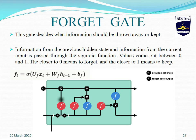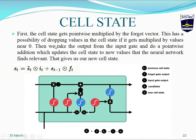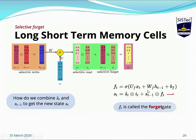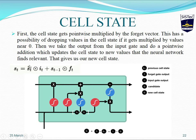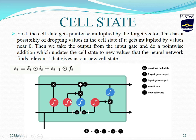The cell state combines all these operations. First, the previous cell state S(t-1) gets a pointwise multiplication by the forget gate vector — this removes unneeded information. Then we take the output from the input gate and perform a pointwise addition to update the cell state. So the new cell state St is the sum of the previous cell state multiplied by the forget gate, plus the temporary state multiplied by the input gate. This updated cell state is then passed forward.